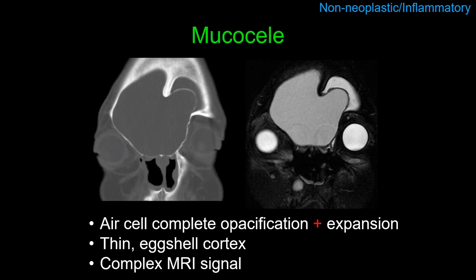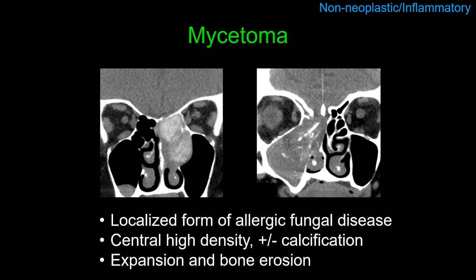A mucocele is a chronically obstructed sinus or air cell. We need two features to diagnose a mucocele: the cell must be completely opacified, and importantly, it must also be expanded — the expansion can be dramatic as in this case of frontoethmoidal mucocele. On CT you may see only a thin or even absent cortical rim. On MR the imaging characteristics can be unusual because the contents can become inspissated with high protein content, giving high T1 signal and dark T2 signal — very odd looking but not uncommon as a mass-like manifestation of chronic inflammatory disease.